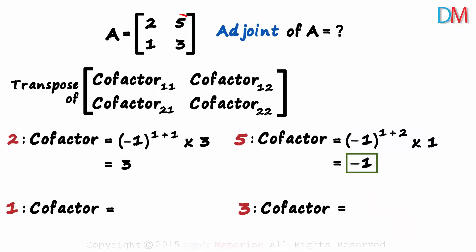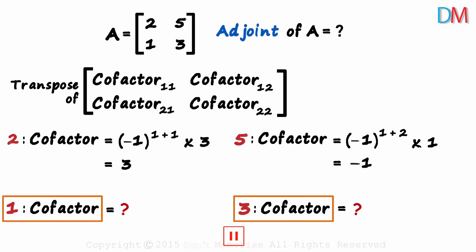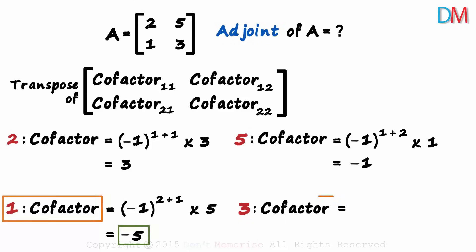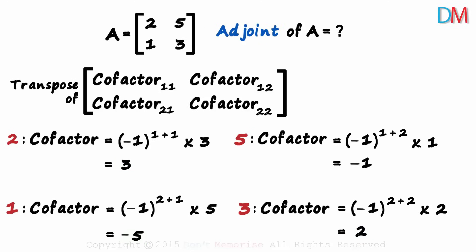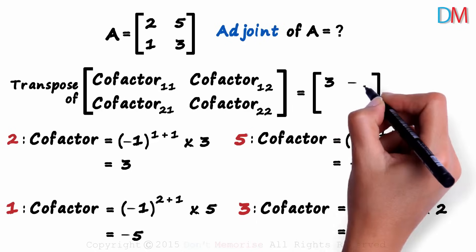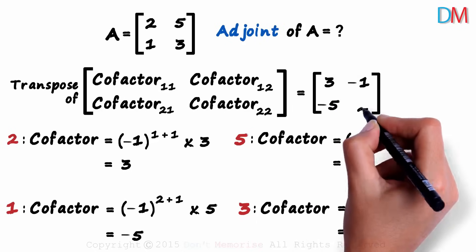Now pause the video and try to find the cofactors of 1 and 3. The cofactor of 1 is minus 5 and that of 3 is 2. These are the 4 cofactors we found. Now we can write this matrix down: 3, minus 1, minus 5, and 2.